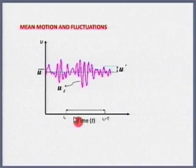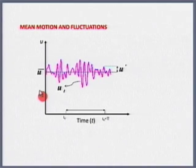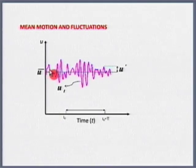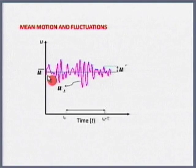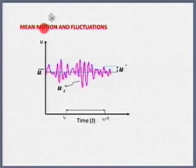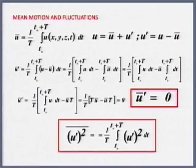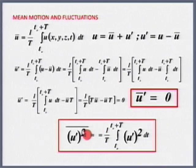Now, you will come across terms where you have the square of the fluctuating quantity. Once we put this into the Navier-Stokes equation, you will see product terms like u(∂u/∂x) where the product of fluctuating quantities appears. Obviously, if one fluctuation is +0.1 and another is −0.1, the square of that is definitely a positive quantity. So the time average of the square of the fluctuating quantity is definitely not equal to zero. Time average of the fluctuating quantity is zero, but time average of the square of the fluctuating quantity is not equal to zero.